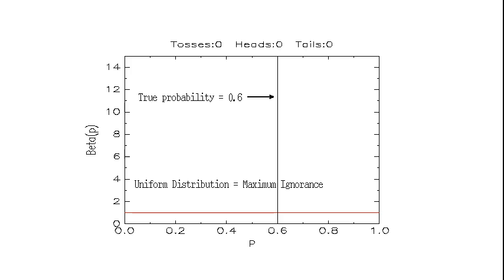This video shows how the beta distribution for the probability of heads changes as you toss a coin. It starts out as a uniform distribution, which means maximum ignorance.